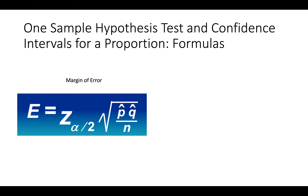For a confidence interval, we need a margin of error. That margin of error is the multiplier — in this case, a z from a normal distribution, a z multiplier — times the standard error of p-hat, where the standard error of p-hat is the square root of p-hat times q-hat, where q-hat is just 1 minus p-hat, divided by the total sample size n. That's for the confidence interval.